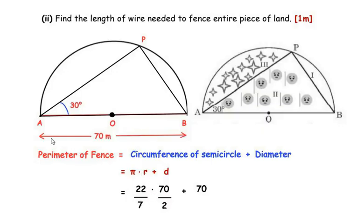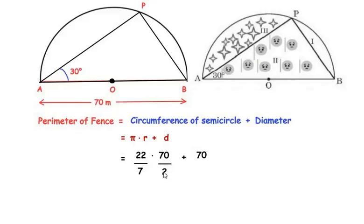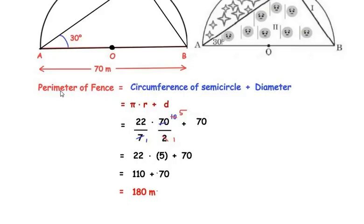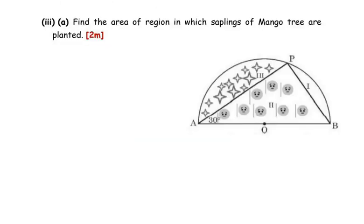The radius is half the diameter: 70 divided by 2 equals 35. So we calculate (22/7) × 35 plus 70. Simplifying: 7 divides into 70 giving 10, and 10 divided by 2 gives 5. This simplifies to 22 × 5 plus 70, which is 110 plus 70, giving a perimeter of 180 meters.